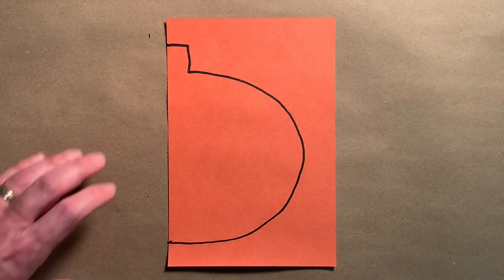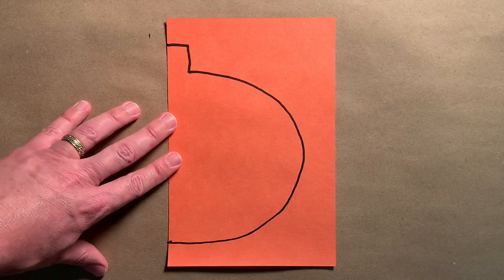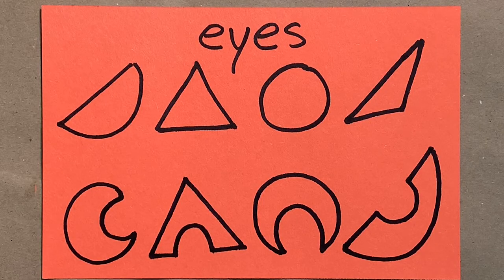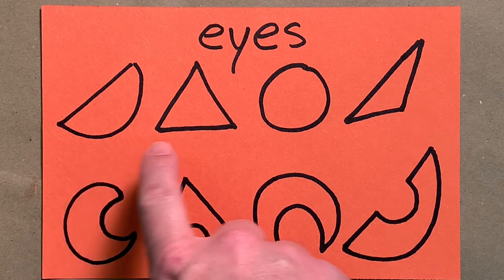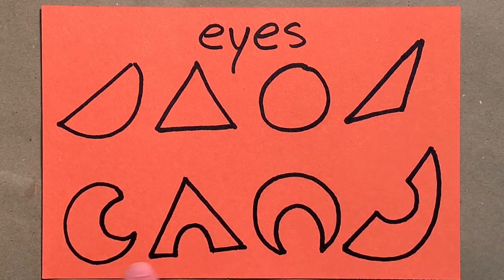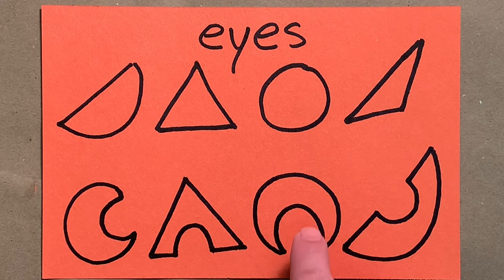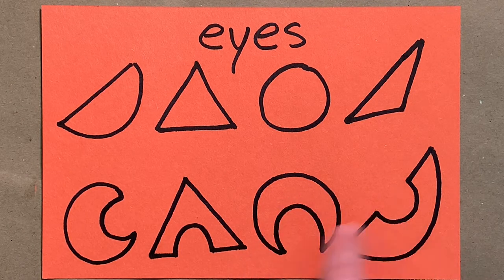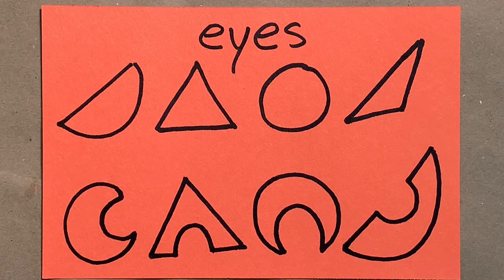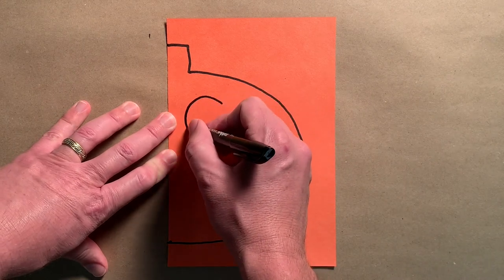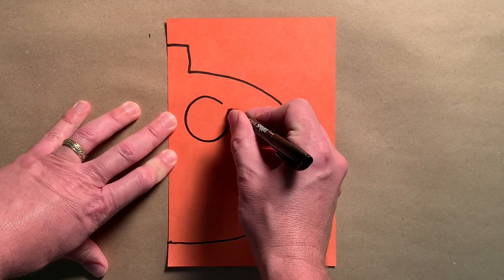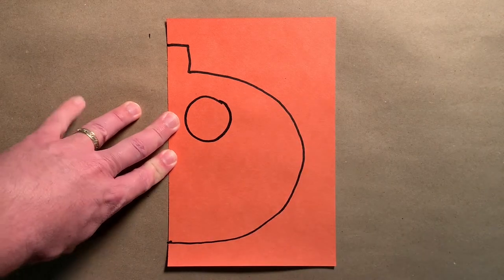Once you get that done, we're going to draw one eye. Here are examples of eyes you might want to use on your jack-o-lantern. The top row are the easier ones to cut out. The bottom row might be a little more challenging because of the half circle here. On this one, I'm going to make a circle. You only need to draw one eye.